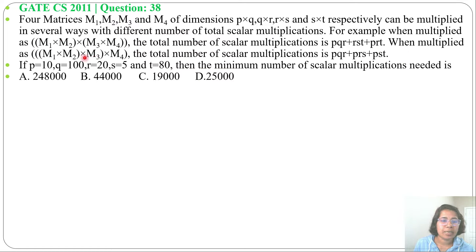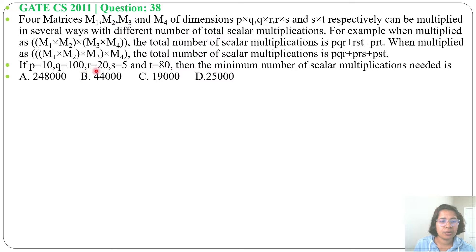When multiplied as ((M1·M2)·M3)·M4, the total number of scalar multiplications is PQR + PRS + PST. If P=10, Q=100, R=20, S=5 and T=80, then the minimum number of scalar multiplications needed is — four options are given.